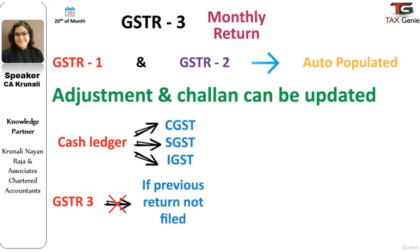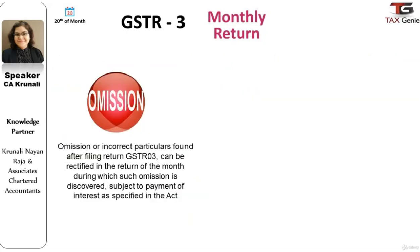Details of the input tax credit ledger, cash ledger, and liability ledger would be updated on the backend on a real-time basis. It is to be noted that any omission or incorrect particulars found after filing of GST Return 3 can be rectified in the return of the month during which such omission is discovered. However, the payment of interest should be made along with the corrections.